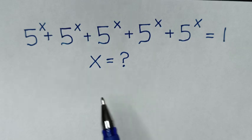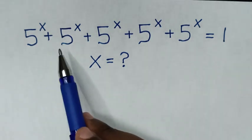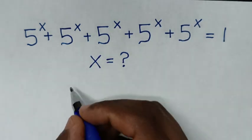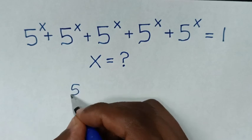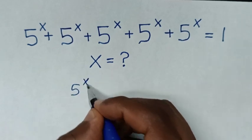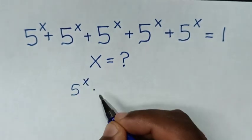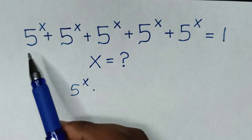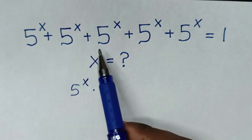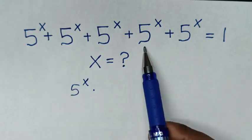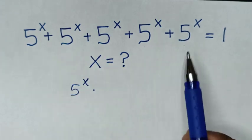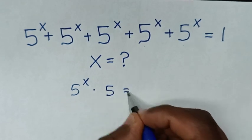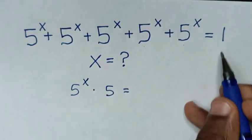So, for this question 5 power of x is common. We take 5 power of x times — there are 5 terms of 5 power of x — so it becomes 5 power of x times 5 is equal to 1.